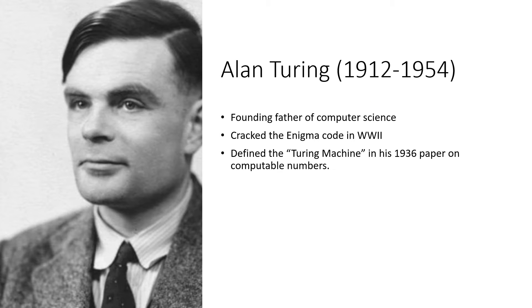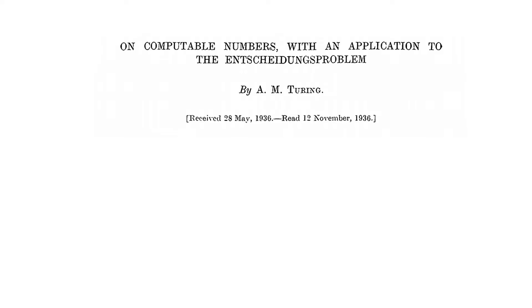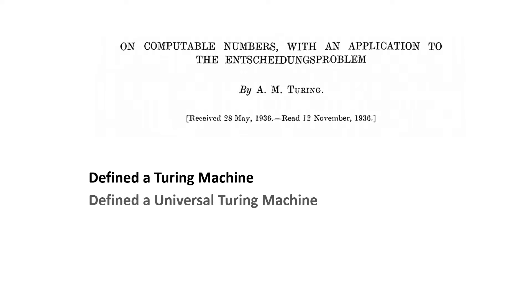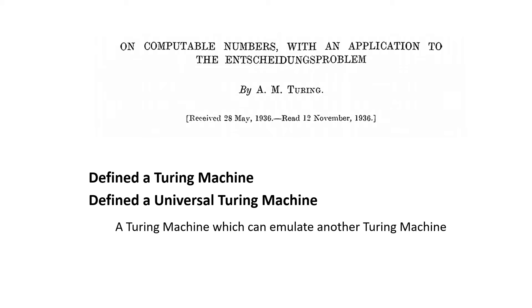He wrote a pivotal paper in 1936, where he formalized what we often do naturally in mathematics. His paper was titled 'Uncomputable Numbers with an Application to the Entscheidungsproblem.' Turing solved this issue of the Entscheidungsproblem, and in doing so he defined a Turing machine and a universal Turing machine, where a universal Turing machine is a Turing machine that can emulate any other Turing machine. So in principle, a universal Turing machine should be able to emulate the 6502 microprocessor.